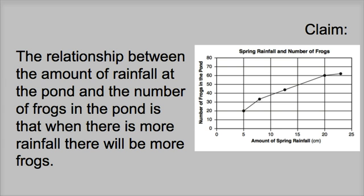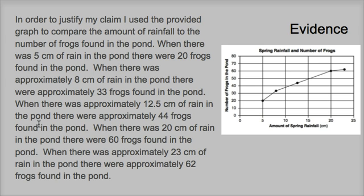Now we have to look at the evidence that backs up the claim. There are a couple different ways you can write up your evidence. One way I use in this example is paragraph form — writing it all out. You could also put it in bullet form with a bullet and all your facts. In order to justify my claim, I used the provided graph to compare the amount of rainfall to the number of frogs found in the pond.